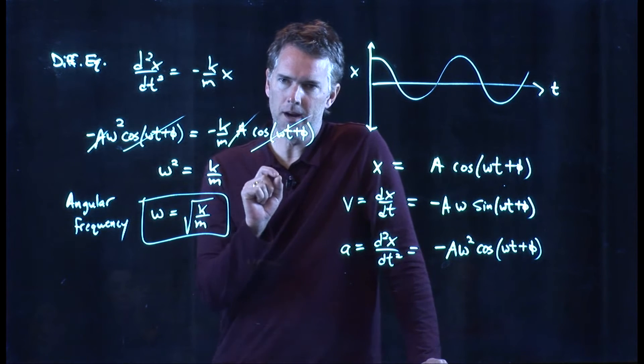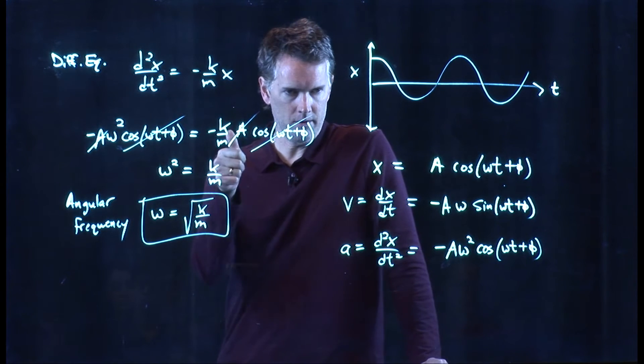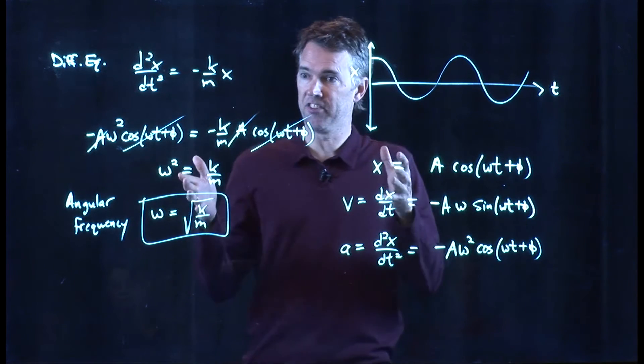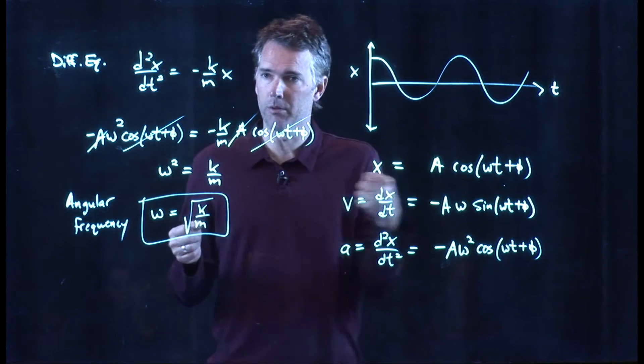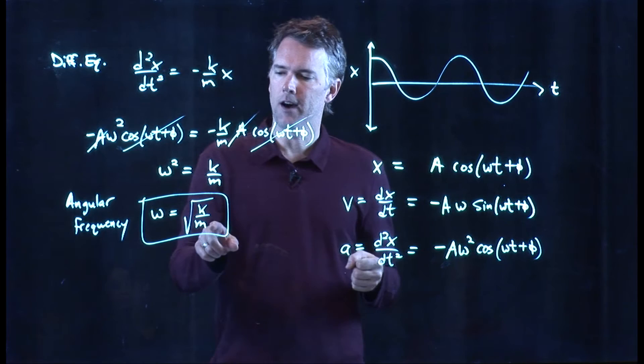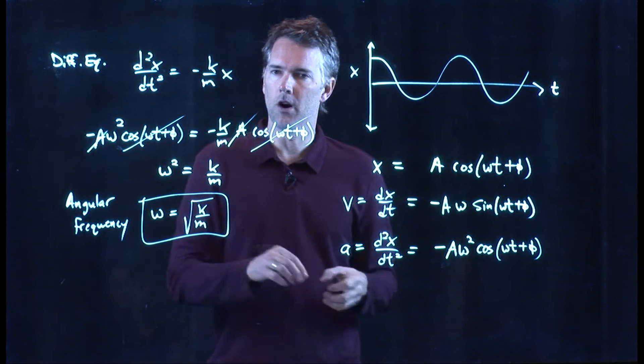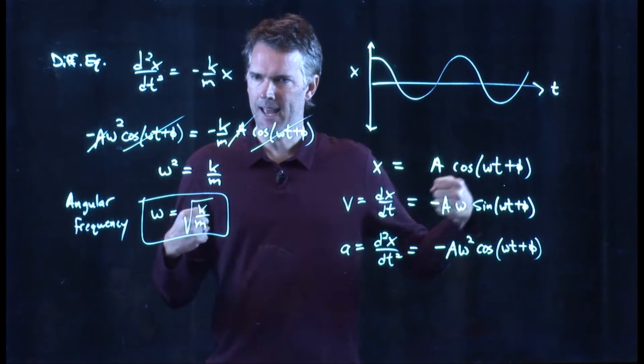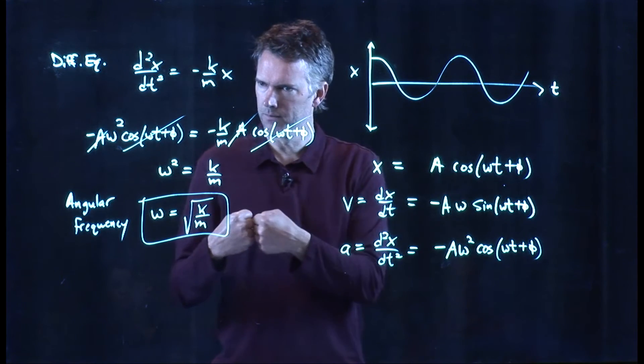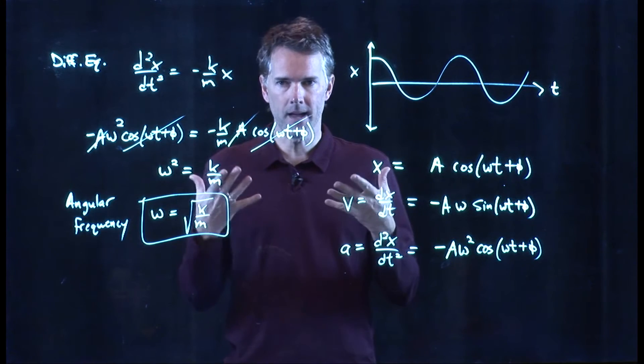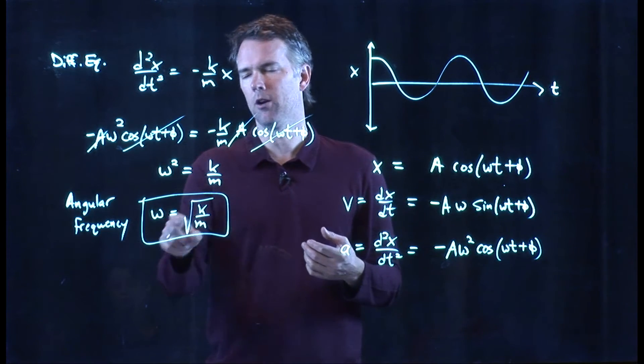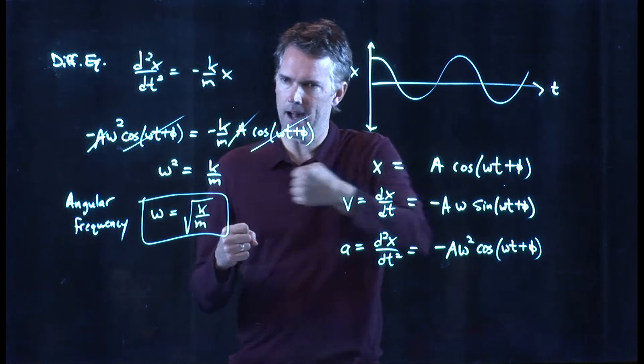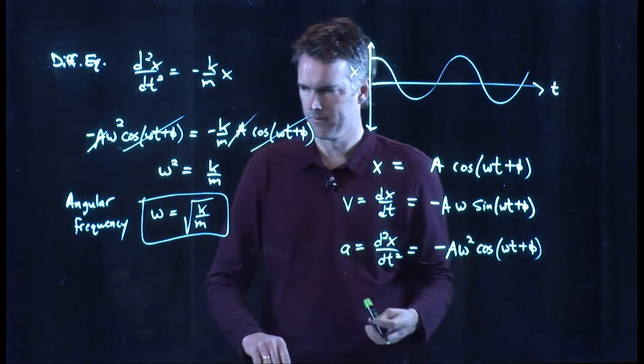Omega is the square root of k over m. This is how fast that thing goes back and forth. If I have a stiffer spring, k gets bigger, omega gets bigger. And that should make sense to you, right? If I have a stiff spring, that box is going to go back and forth really fast. If I have instead a large mass attached to the spring, that spring can't pull on it and move it quite as easily. And so m big in the denominator means that omega is small. And so that would be a big sluggish mass going back and forth.